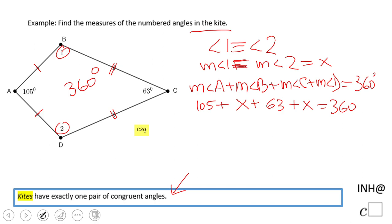So now we end up with an algebraic equation. All right, so the next thing we're gonna do, we're gonna combine like terms. 105 plus 63 is 168. We're gonna combine these two X's, so we have 168 plus 2X equals 360.